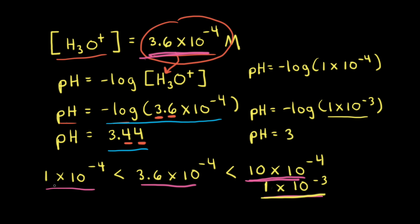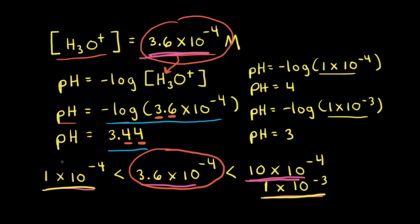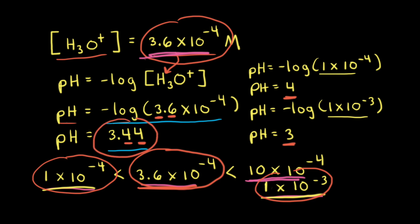And if the concentration of hydronium ions is 1 times 10 to the negative fourth — this is a log base 10 system — the negative log of 1 times 10 to the negative fourth would be equal to a pH of four. Since 3.6 times 10 to the negative fourth is between 1 times 10 to the negative fourth and 1 times 10 to the negative third, the pH must be between four and three. And we saw with our calculator that the pH came out to be 3.44.